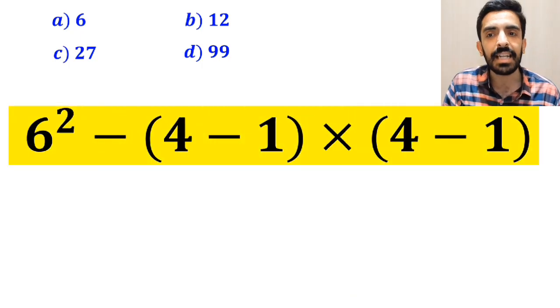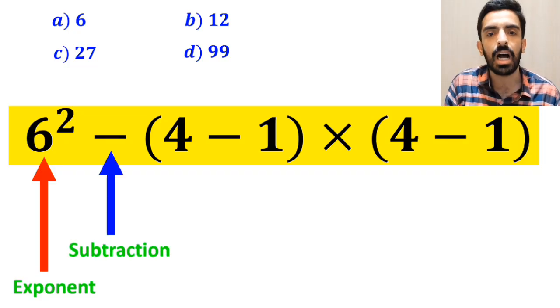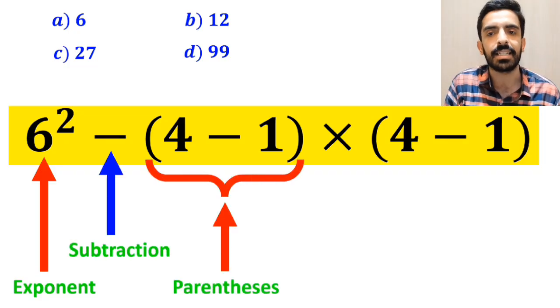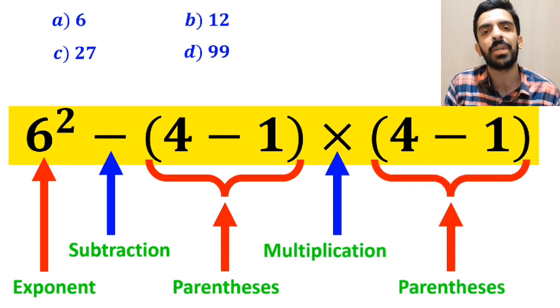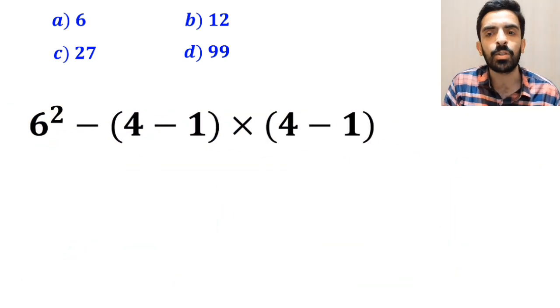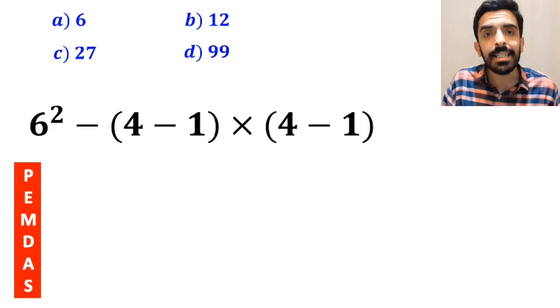As you can see in the image, in this question, first we have an exponent, then a subtraction sign, and after that parenthesis, followed by a multiplication, and finally another parenthesis. To solve this question, we must strictly follow the PEMDAS rule.